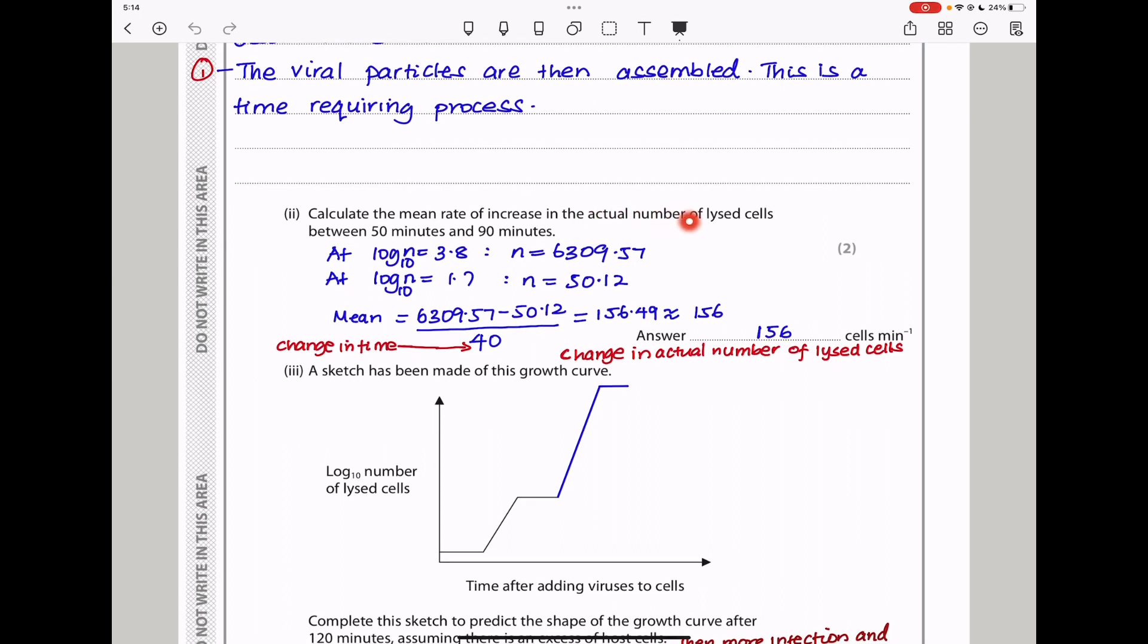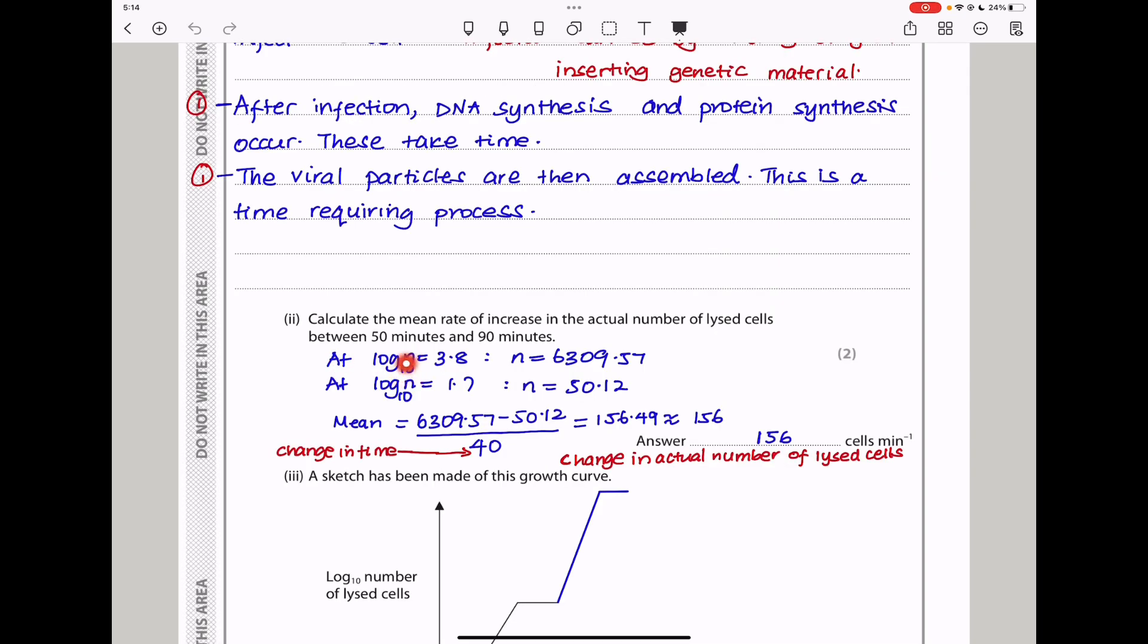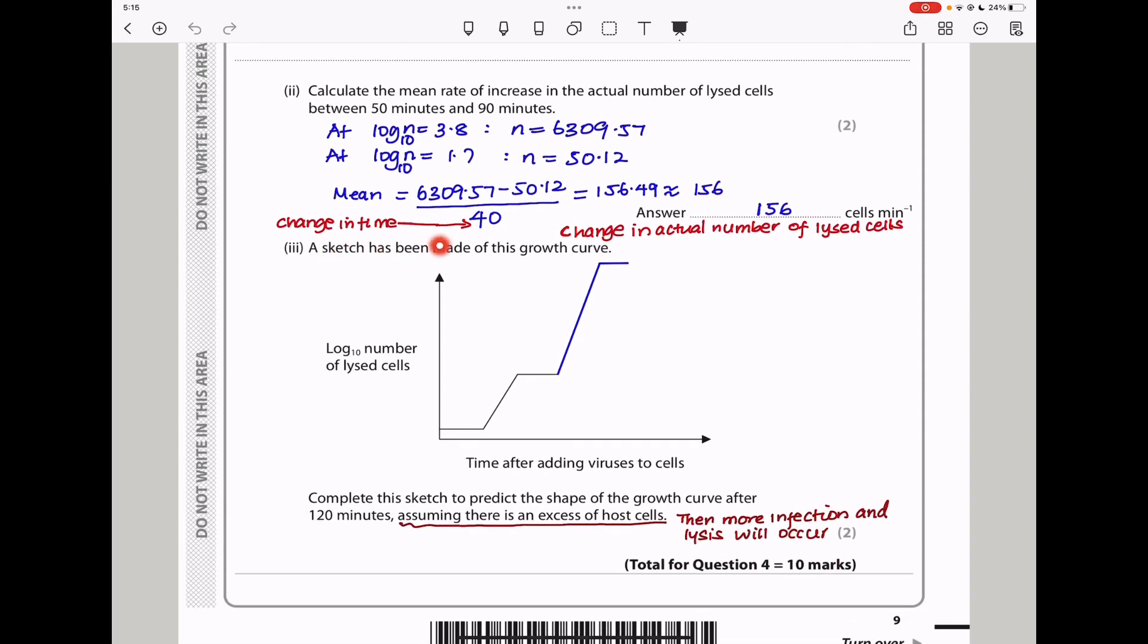Next they say calculate the mean rate of increase in the actual number of lysed cells between 50 minutes and 90 minutes. Going back to the graph, we can see between 50 minutes, at that time, log to base 10 is equal to 1.7. At the 90 minute mark, we see log to base 10 is 3.8. The difference here is 90 minus 50, which is 40. If the log to base 10 of n is 3.8, our n is 6309.57, where n is the actual number of cells. And then log to base 10 of n is 1.7, which gives us n equal to that. So the difference should be that minus that, which is this, divided by the change in time, which is 40. And the answer is that, which is approximately 156 cells per minute.